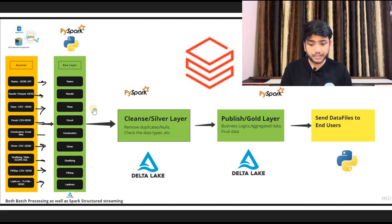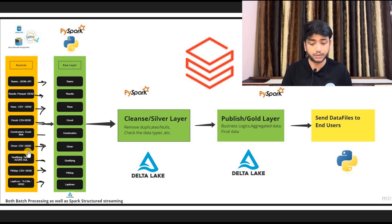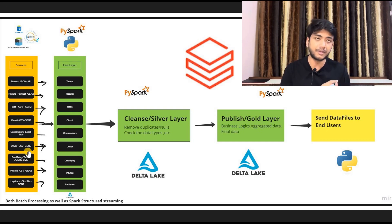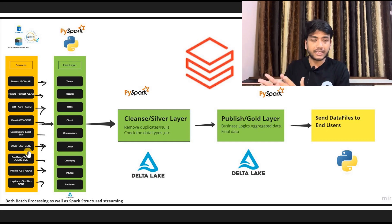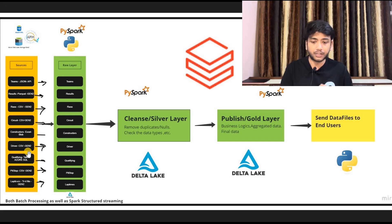Once that is done, we are doing two kinds of things: one is batch processing and the second is Spark Structured Streaming. Some sources use batch processing and some use Spark Structured Streaming. We are also doing two kinds of loads — one is full load and the second is incremental load. Basically, we take all the data present in the source and put it into our raw layer, and then on top of the raw layer we clean the data.